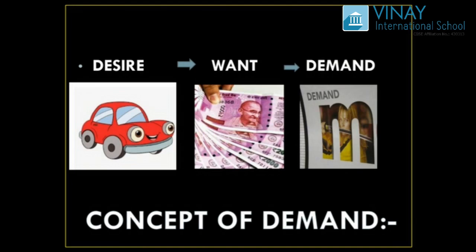So: when I was just thinking about the car, that was my desire. When I got money and thought I could buy it, it became my want. And when I actually bought the car, it became my demand. These three terms — desire, want, and demand — are interchangeably used but technically they are different. To think is desire; to consider that you have money to buy is want; and when you actually buy it, that is demand.